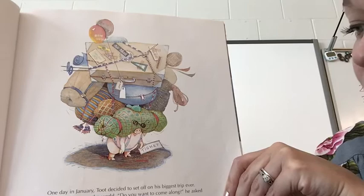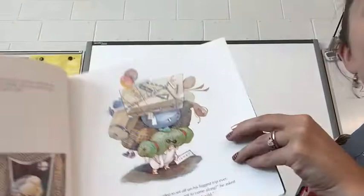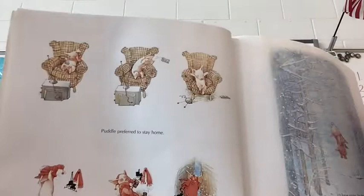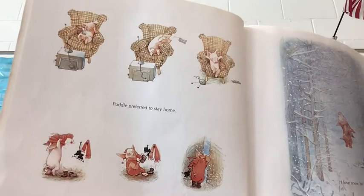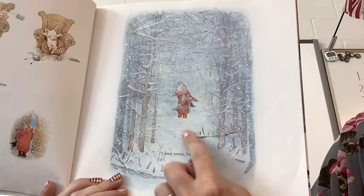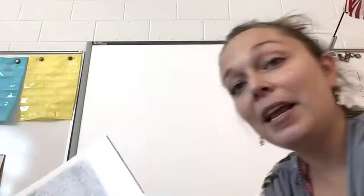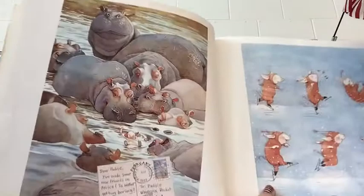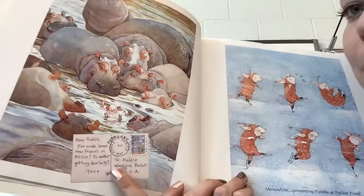If I was taking a trip, I would want to go someplace warm and wild. Puddle preferred to stay home. He decided to put on his ice skates and go outside. 'I love snow,' he thought. So — are you more like Toot who likes to travel, or Puddle who likes to stay home? This is what I love about this author — she included postcards in all of her pictures and kind of compares Toot's travels to what Puddle is doing at home. You'll see this kind of jump back and forth between Toot and Puddle.